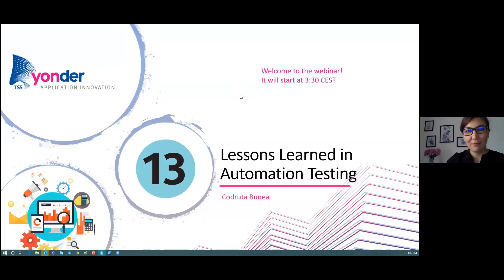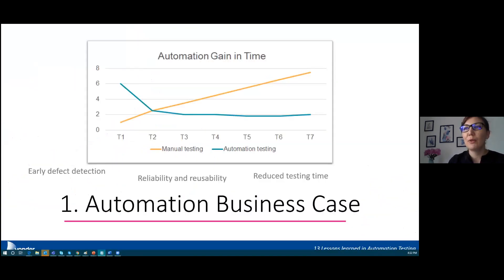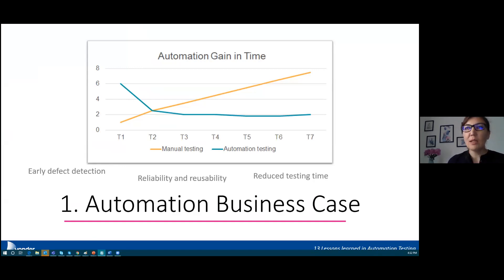The first lesson is automation as a business case. It's important to know what automation is and what's happening in this space. Test automation is the use of software to control the execution of tests and the comparison of actual outcomes with predicted outcomes. The gains include defect detection, reliability, reusability, and reduced testing time. I collected data from projects in our company and created a graph to illustrate our time gains with automation.